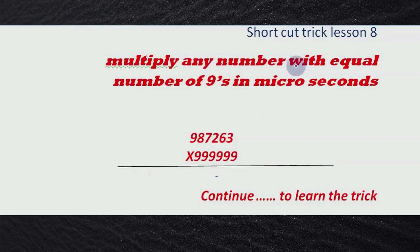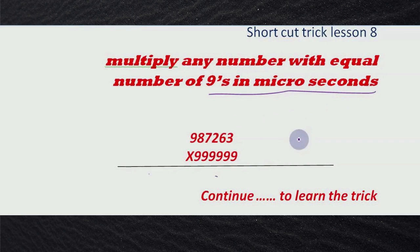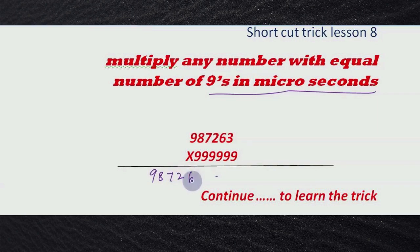Multiply any number with an equal number of nines in microseconds or seconds. For example, 9872636 — a seven-digit number multiplied with six nines — the answer will be 9872620127.